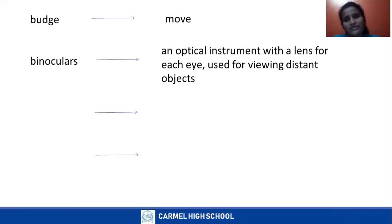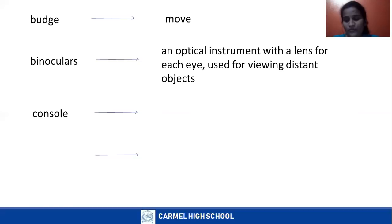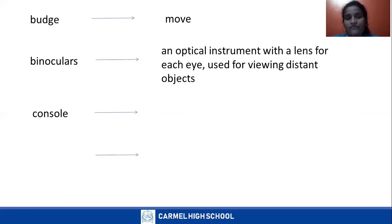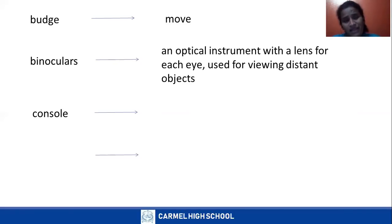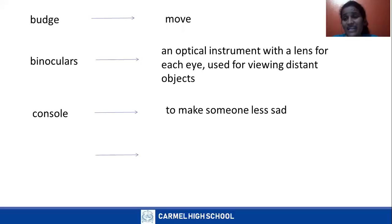Binoculars — an instrument to view distant objects. Everyone might have seen and used them. Next one is console. When your friend is sad, or crying, or very upset, or very disappointed — will you leave your friend like that? No. You will try to console them. You will try to make them laugh, give them happy news, keep them calm and quiet. That is called console — make someone less sad.